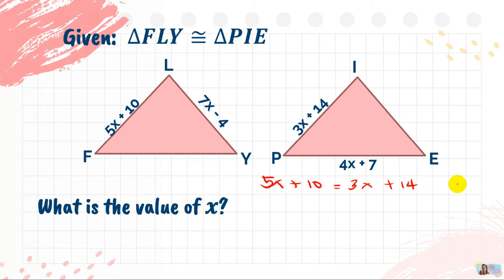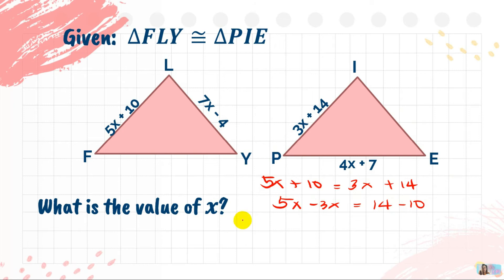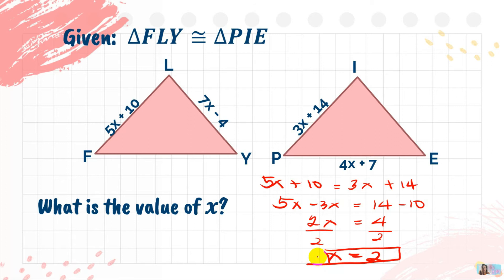Solving algebraically: collect the X terms on one side. The additive inverse of positive 3X is negative 3X, and the additive inverse of positive 10 is negative 10. So: 5X minus 3X equals 2X, and 14 minus 10 equals 4. Then divide both sides by 2 to find X. X equals 2, and this value applies to all the binomials in our two triangles.